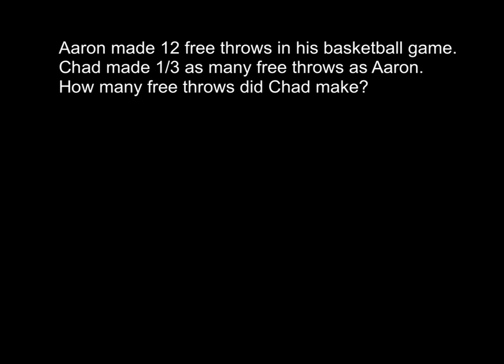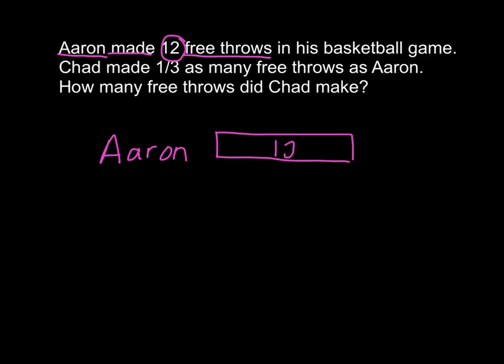Let's look at one more that uses fractions. Aaron made 12 free throws in his basketball game. Chad made one-third as many free throws as Aaron. How many free throws did Chad make? The information we know is that Aaron made 12 free throws, so we can draw Aaron's bar with a value of 12. Chad made one-third as many — that means he made less. One-third is a fraction, and a fraction means it is less than a whole, so we make a bar for Chad.